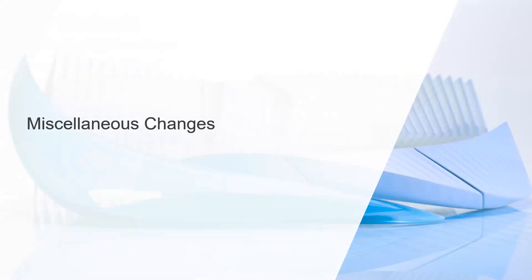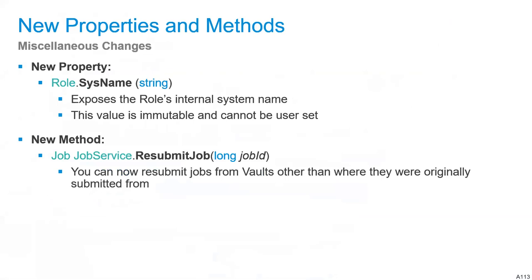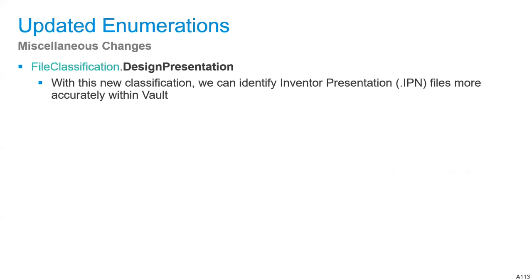There are also miscellaneous changes. A new exposed property on the Roles class called SysName is immutable, which came about as an update to allow unique background colors for administrators. A new method for the Job Service called Resubmit Job allows resubmitting jobs from vaults other than where they were originally submitted from. An update to a file classification enumeration adds a new Design Presentation value to better identify Inventor presentation files within vaults.